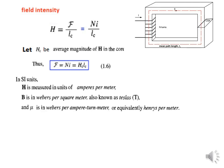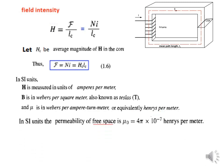The unit of magnetic field intensity H is amperes per meter in SI units. Flux density B is measured in Webers per square meter, also known as Tesla. Permeability mu is in Webers per ampere per meter, or equivalently Henrys per meter. The permeability of free space or air, written as mu-naught, has a value of 4π × 10⁻⁷ Henrys per meter.